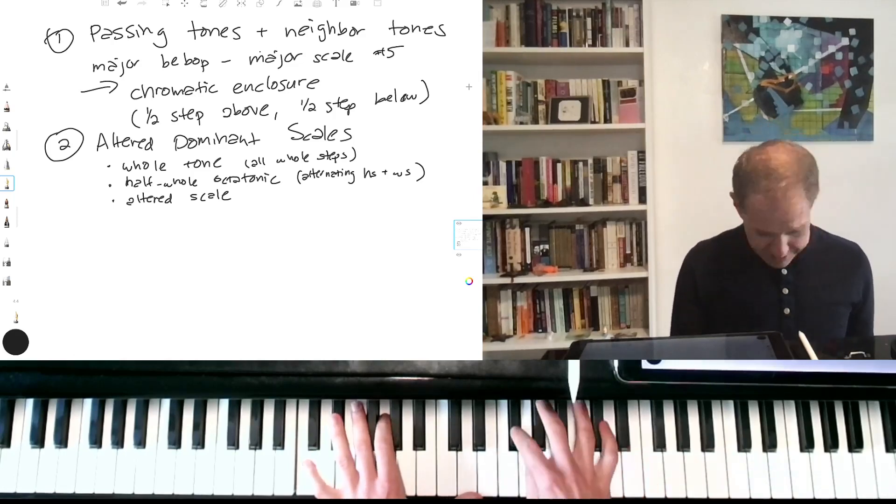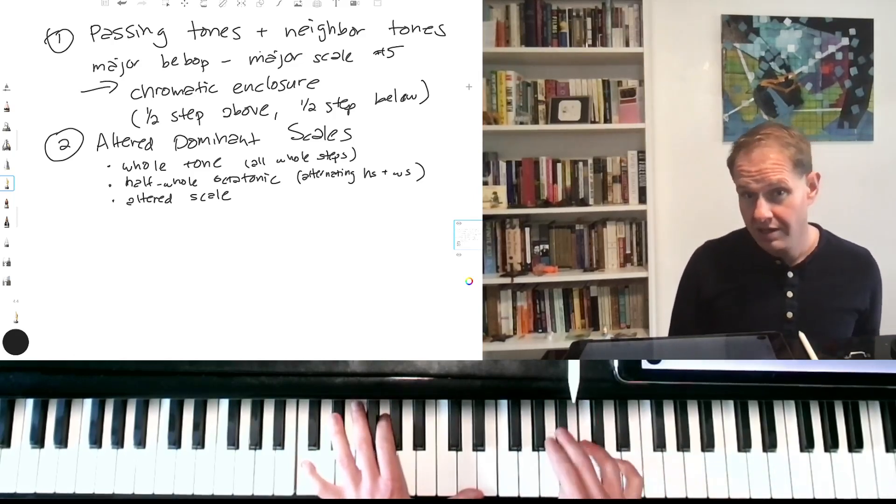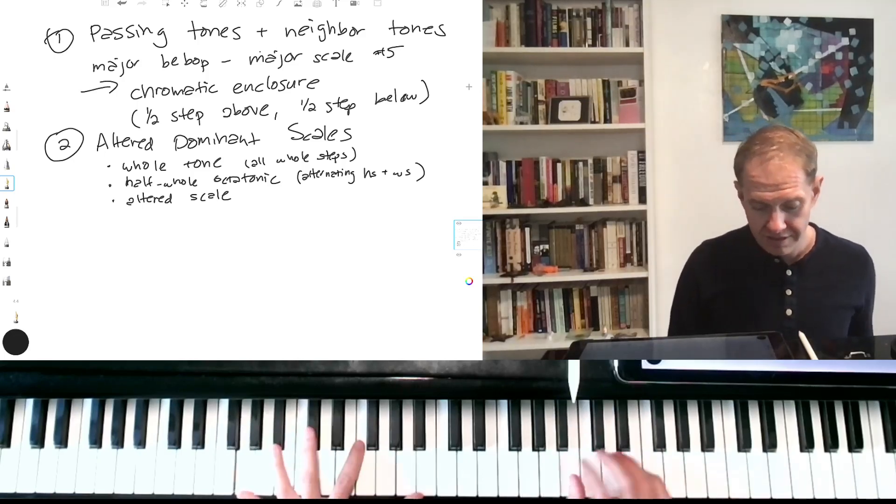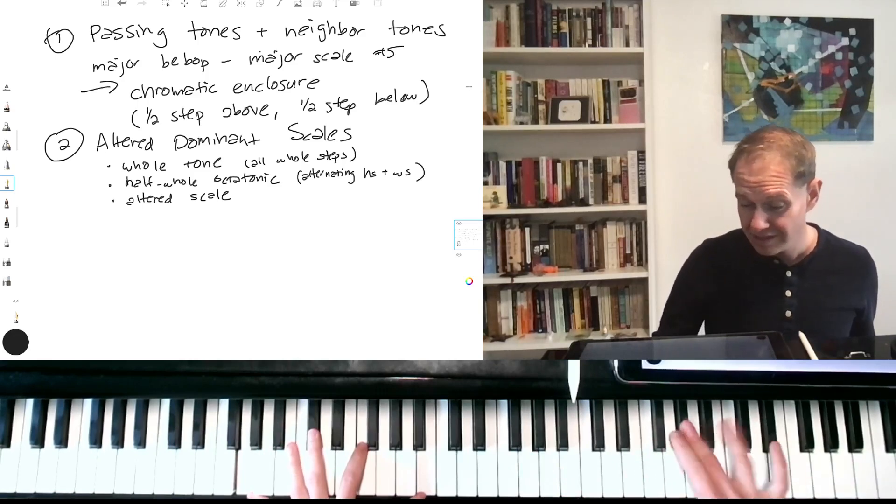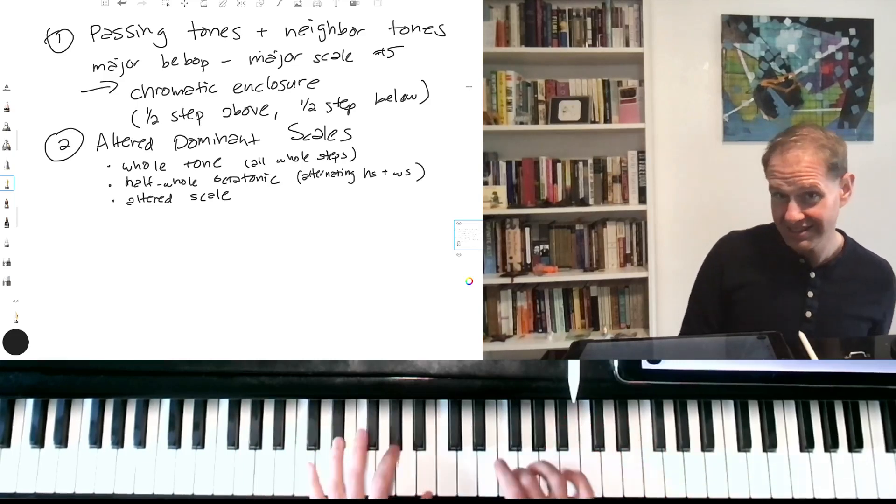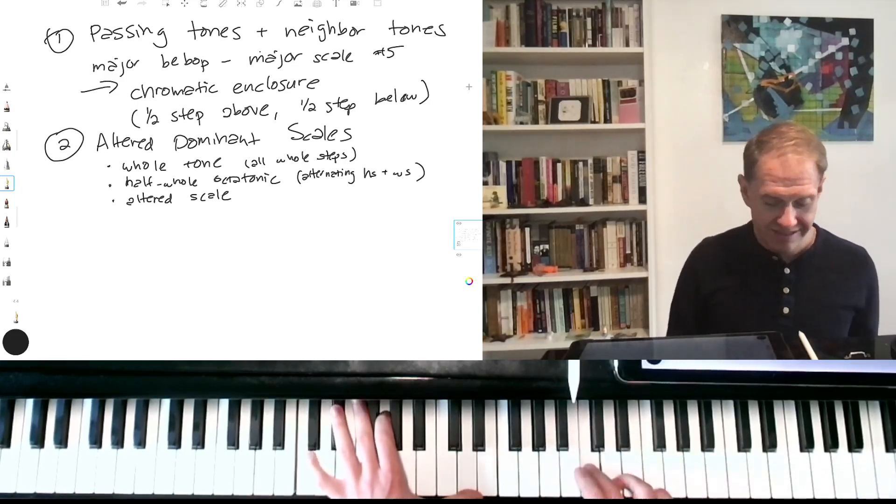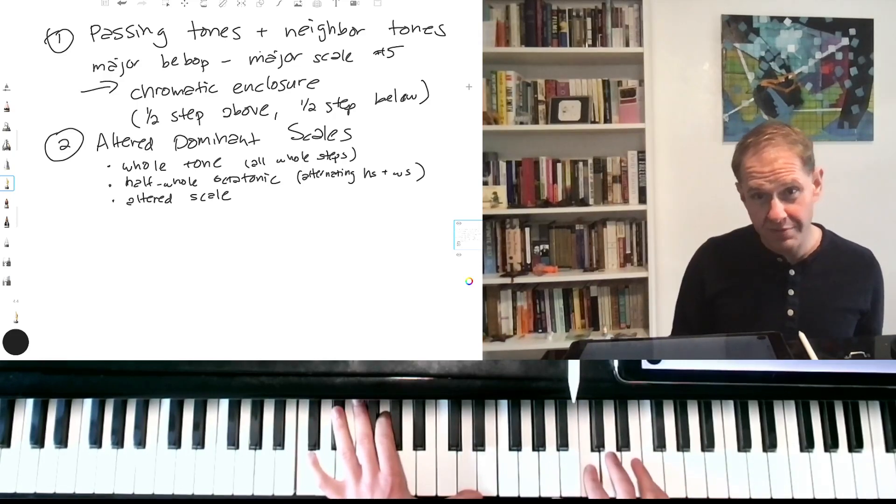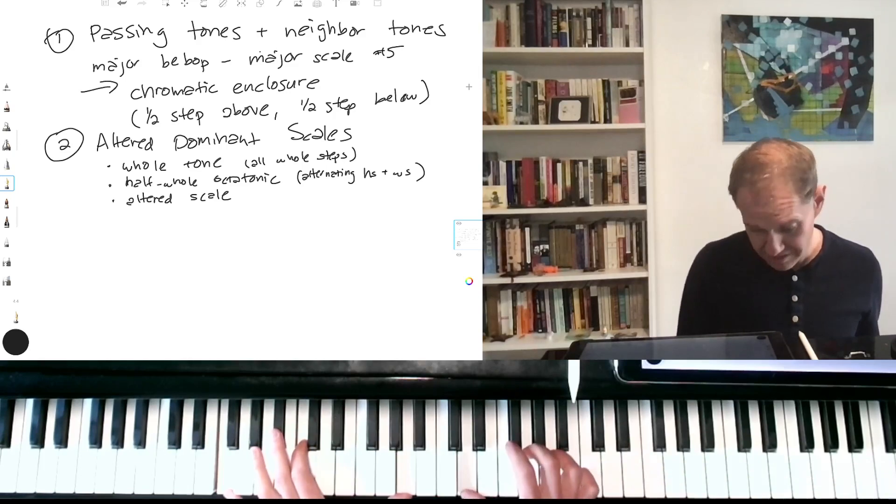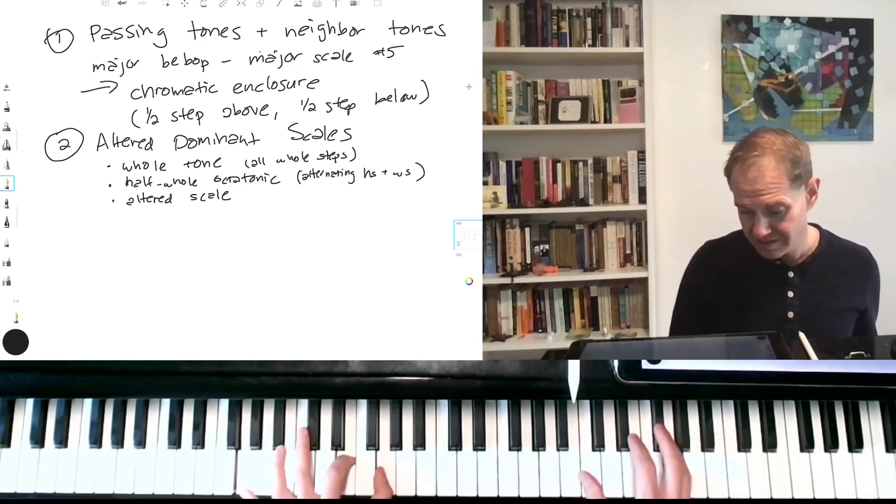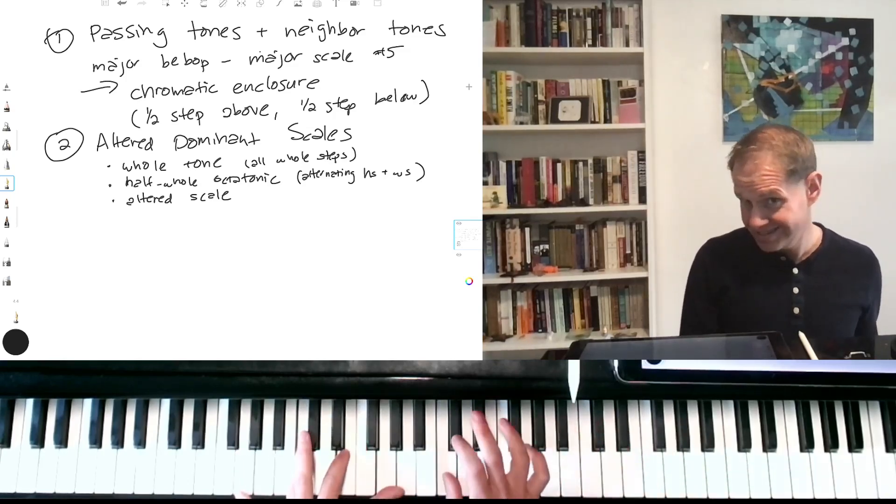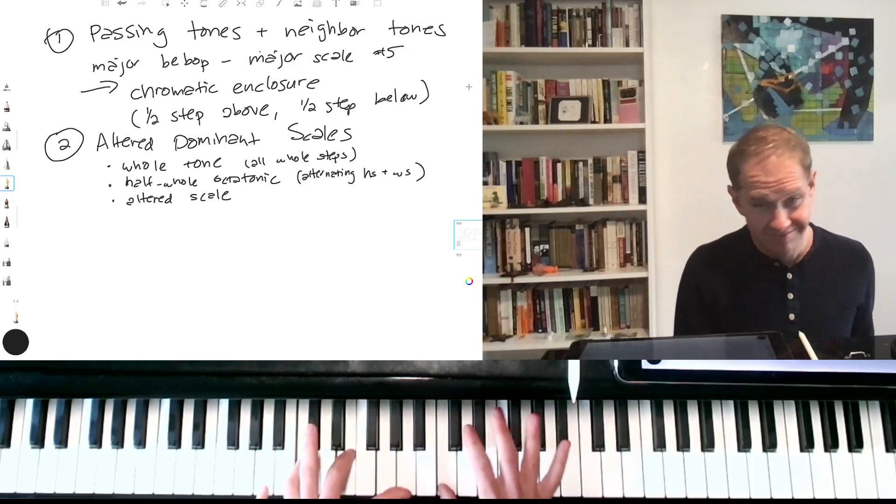So now when I get to my G7, I'm going to use some of these altered dominant scales. So there's a neighbor tone, there's an enclosure. I'm using my half-octatonic scale. A little neighbor tone, I'm going to do a passing tone, neighbor tone, whole-tone scale.